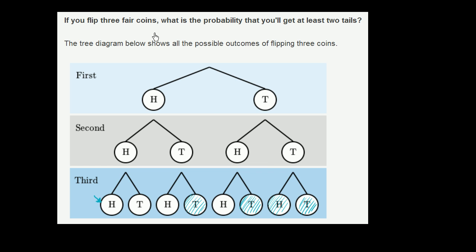So let's go back to the question: What is the probability that you'll get at least two tails? How many equally likely outcomes are there? We're assuming this is a fair coin. We see that there are one, two, three, four, five, six, seven, eight equally likely outcomes.